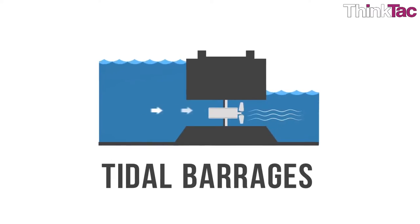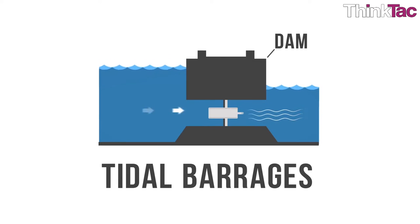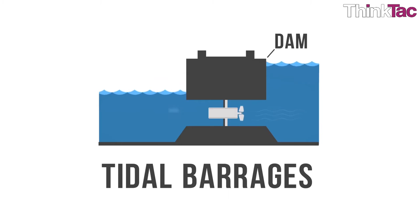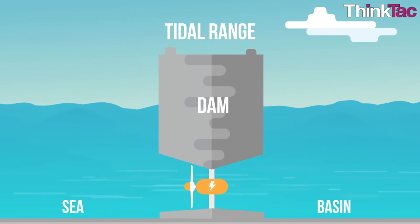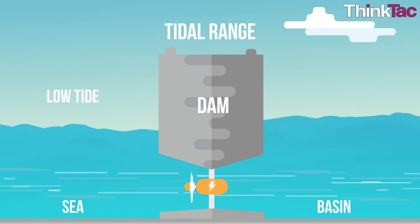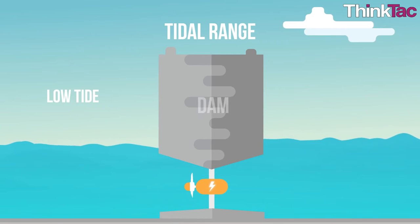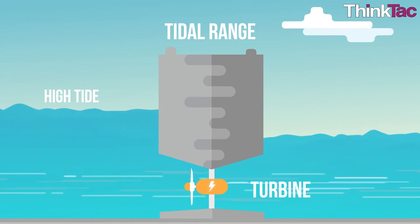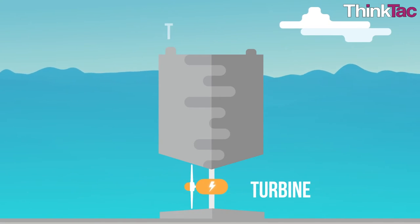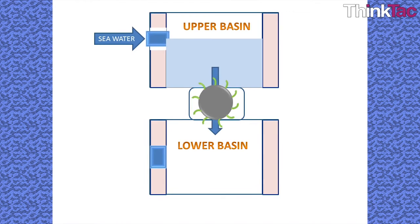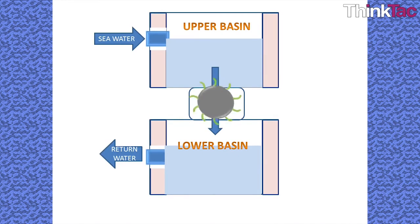In another form of power generation, tidal energy is trapped by making a dam across the opening to a tidal basin. The dam has a sluice — a gated waterway — through which the high tide water flows into the basin, following which the sluice is closed. When the sea level drops, electricity can be generated from the elevated water in the basin through conventional hydropower technologies. This is known as a tidal barrage.